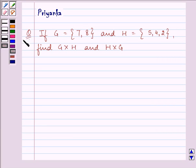Hi and welcome to the session. The question states, if G equals {7, 8} and H equals {5, 4, 2}, find G cross H and H cross G.